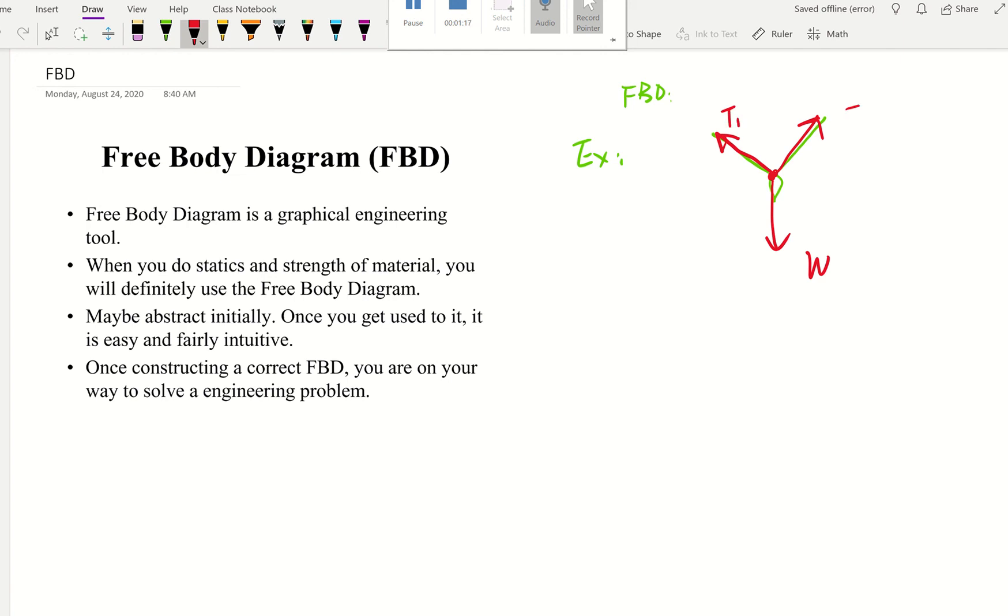That's all the forces acting on this chandelier, that's the FBD. Then if you know the weight, for example weight is 10 Newtons, you can draw it here. If you need to find out the tension in these ropes, you will find those two unknown tensions. So that's FBD, and this is a tool that helps us find the unknowns in equilibrium problems.